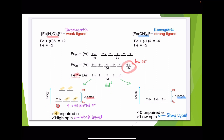Because this is 3d⁶, fill starting from the lowest T2G orbitals: 1, 2, 3. You cannot pair yet because this is the weak field ligand — paramagnetic. So you give one electron to each orbital, covering all orbitals first. For 3d⁶: fill 1, 2, 3, 4, 5, and the last electron pairs with the first orbital, giving position 6.